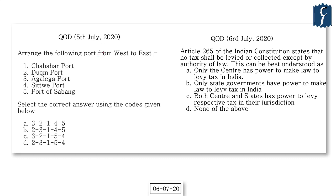The question of the day for 5th July was to arrange the following ports from west to east: Chabahar port, Duqm port, Agalega port, Sitwe port, and Port of Sabang. The correct answer is A — Agalega port is westernmost and Port of Sabang is easternmost. The question of the day for 6th July: Article 265 of the Indian Constitution states no tax shall be levied or collected except by authority of law. Which statement is correct? A: Only the centre has power to make law to levy tax; B: Only state governments have power; C: Both centre and states have power to levy respective taxes in their jurisdiction; D: None of the above.